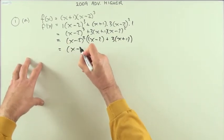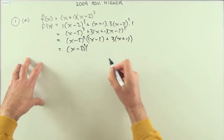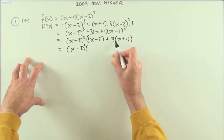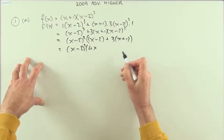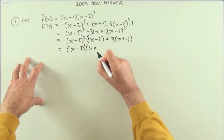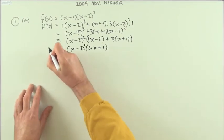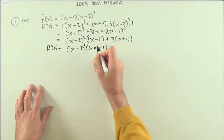So that's going to give me x minus 2 squared times, and then just tidying that up, I've got 3x and another x is 4x, and I've got plus 3 minus 2 plus 1. So there's f dashed x.